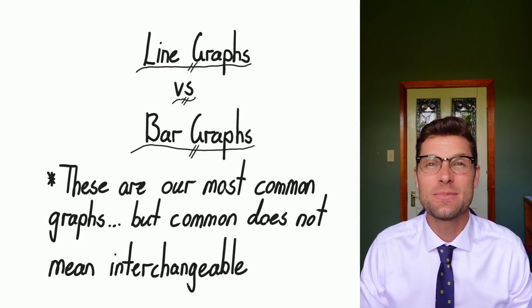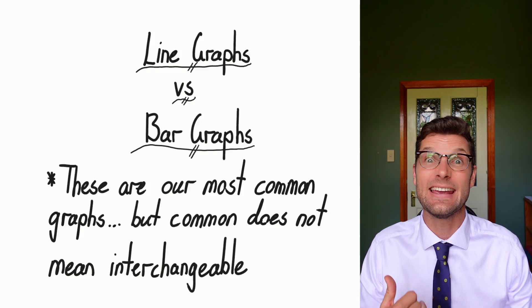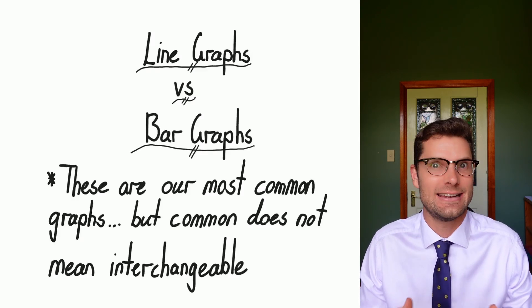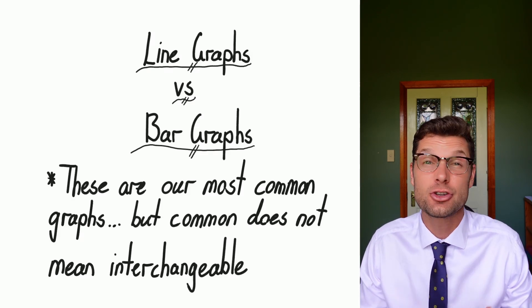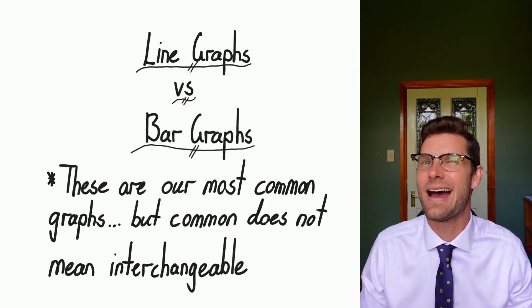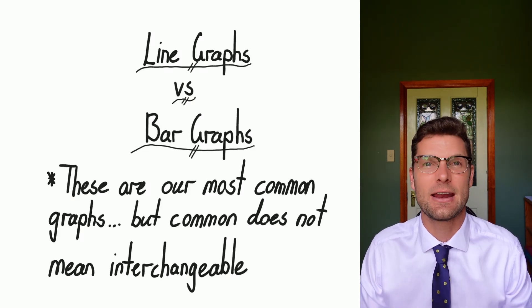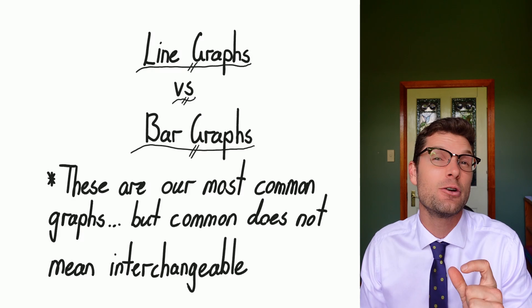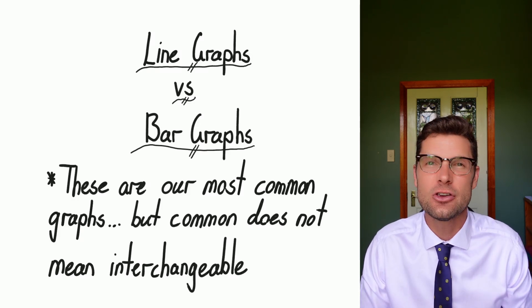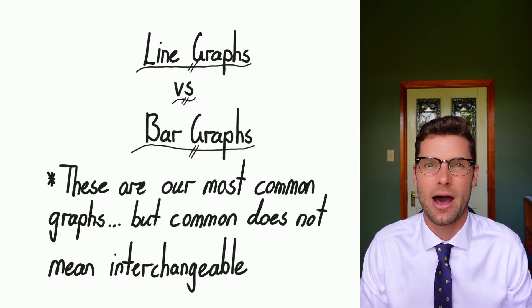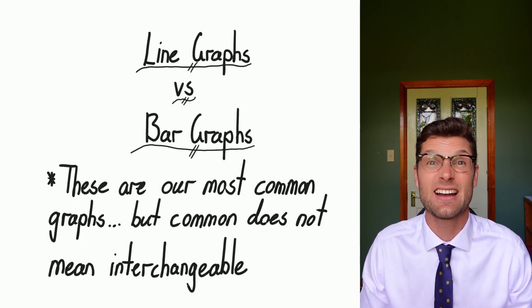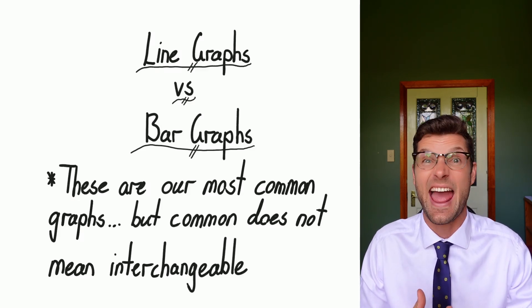One of the big mistakes that a lot of students make in maths and science is using these interchangeably. These are our two most common types of graph, but most common does not mean you can just pick any one, whichever one you like more. There is a specific set of rules for when you can use a line graph and when you can use a bar graph. Making sure you're on top of this will always get you one or two marks in maths and science.